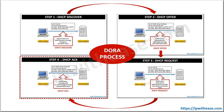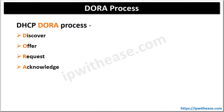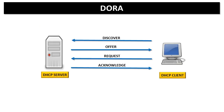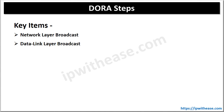Now we will understand the DORA process in DHCP in detail. The DHCP DORA process stands for the following message flows between the client and the server. In all, there are 4 flows which include: 1. Discover, 2. Offer, 3. Request, 4. Acknowledge. The diagram depicts the message flow between the DHCP client and the DHCP server. Now let's take a look at what happens when these messages are exchanged between the DHCP client and DHCP server.